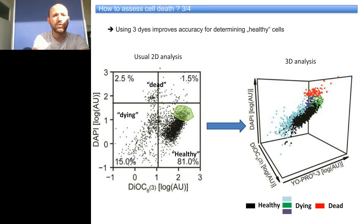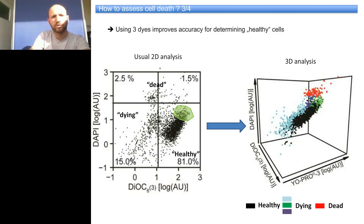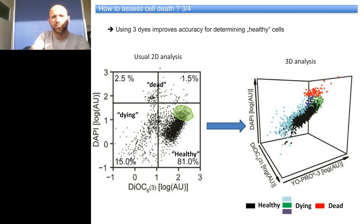This slide shows the necessity of using three dyes instead of two. On the left, you can see a typical standard 2D FACS analysis using DAPI and DiOC, where among healthy cells there are about 81% healthy cells. But if you add the YoPro dye to the same sample, you will see that population clustered as healthy is in fact a dying population — representing about 15% of total events. This means that 2D analysis can introduce wrong results by misclassifying dying cells as healthy.